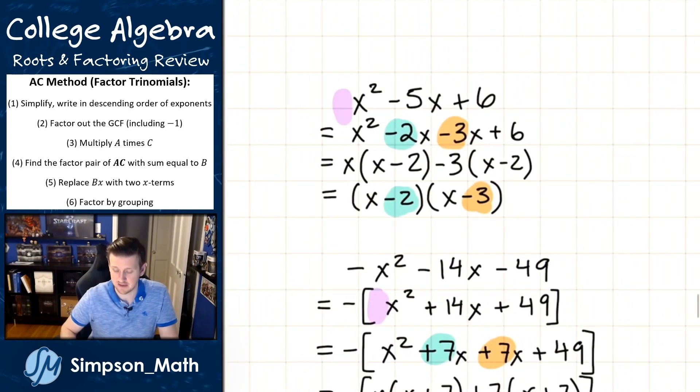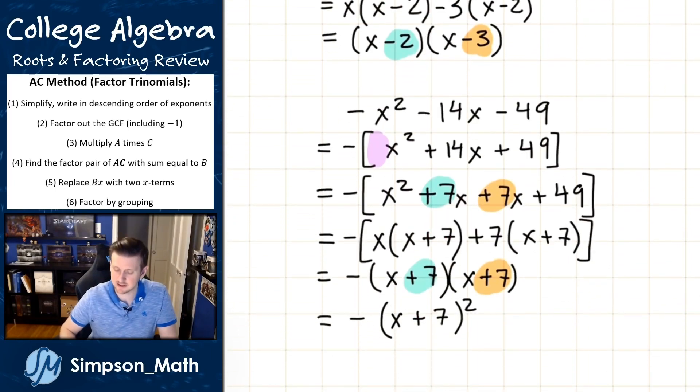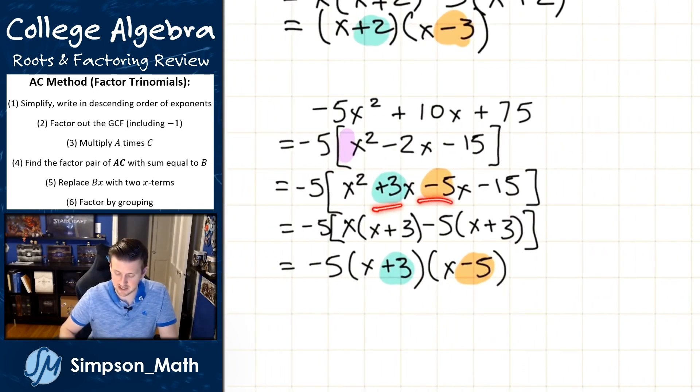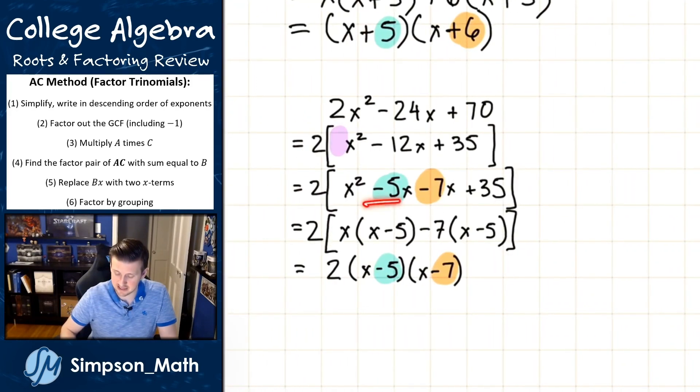Over here, I have a negative 2 and a negative 3, and I end up with x - 2, x - 3. Does that work with these with GCFs? When I had an A of one after the GCF? So here I have a factor pair of 7 and 7, and yep. Here I have a factor pair of 3 and negative 5, yep. Here I have this last one negative 5 and negative 7, and yep.